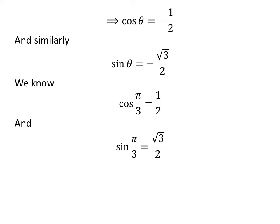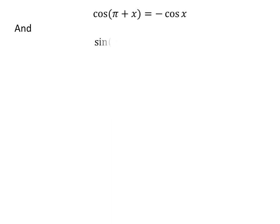Since both cosine of theta and sine of theta are negative, theta lies in the third quadrant. We know cosine of pi upon 3 is half and sine of pi upon 3 is square root of 3 upon 2. We also know that cosine of pi plus x is equal to minus cosine of x and sine of pi plus x is equal to minus sine of x.